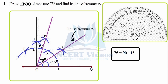Question 1: Draw angle POQ of 75 degrees and find its line of symmetry. There are two ways to draw a 75 degree angle. First, you can use a protractor — just point it here and go all the way up to 75 degrees. But since we have studied construction with the help of compasses, we will do that instead.